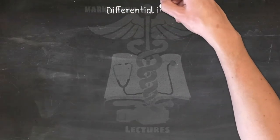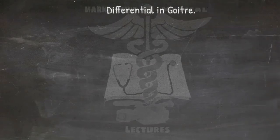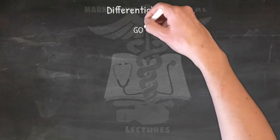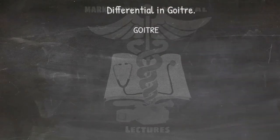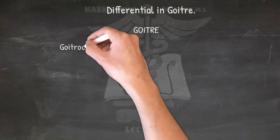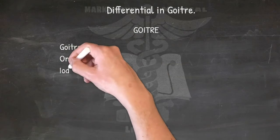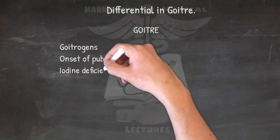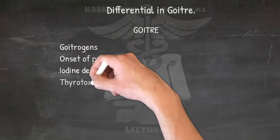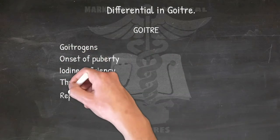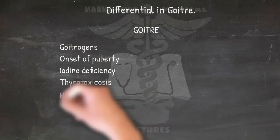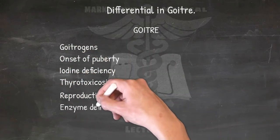Differential in goiter: GOITER — Goitrogens, Onset of puberty, Iodine deficiency, Thyrotoxicosis, Enzyme deficiencies, and Reproduction.